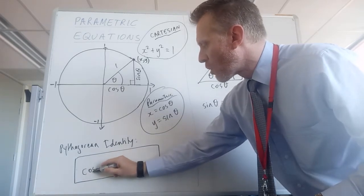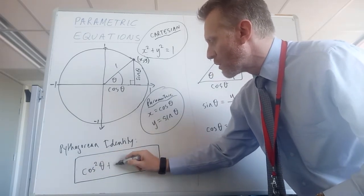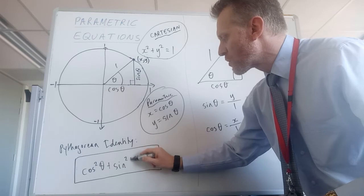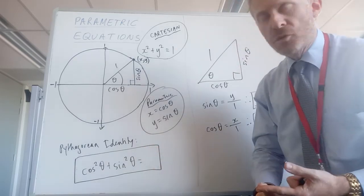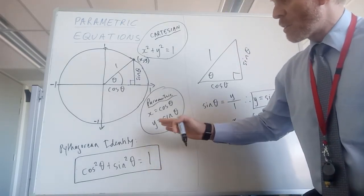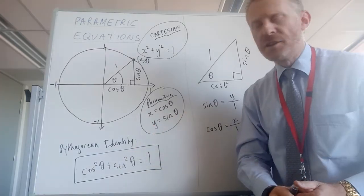Therefore, the sum of the two shorter sides, cos squared theta, that's the square of cos, plus sine squared theta, is equal to the square of the hypotenuse, which is 1. That's called the Pythagorean identity.